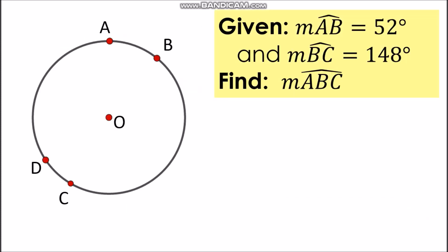Another example is let's say we have this circle O wherein measurement of arc AB is given, which is 52 degrees, and the measurement of arc BCD is also given, which is 148 degrees. Now we need to identify the measurement of arc ABCD.